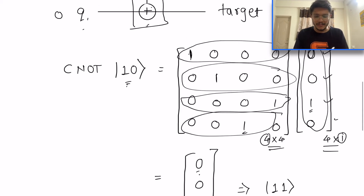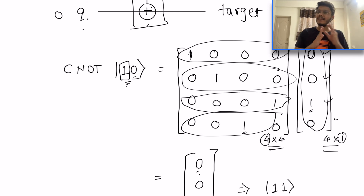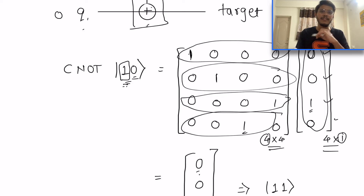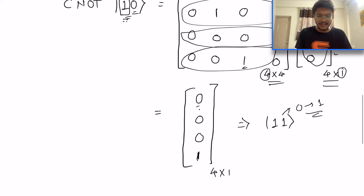This result makes sense: when your control qubit is 1 — or set to on — your target qubit gets flipped. Here the control qubit was 1, so the target qubit changed from 0 to 1, giving the output state |11⟩. That's how CNOT works.